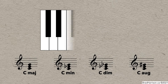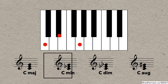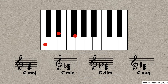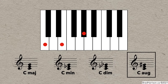To visualize this on the piano, here's the C major triad. To make it a minor triad, we just lower the third by a semitone. To make it a diminished triad, we also lower the fifth by a semitone. Finally, the augmented triad is just like the major except the fifth has been raised by a semitone.